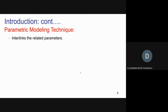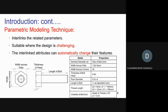Next is parametric modeling technique. If you're already aware of CAD modeling, you likely know about this. I have adopted this technique for development of the CAD model in my system. Parametric modeling technique interlinks the related parameters. At the bottom you can see a hexagonal bolt — its dimensions are completely dependent on one dimension: the nominal diameter, usually called 'd'.